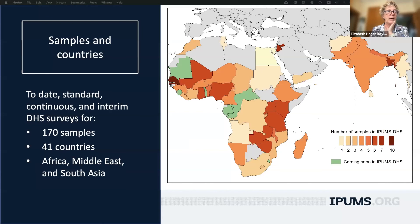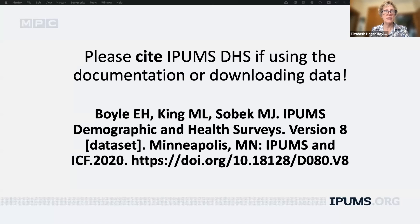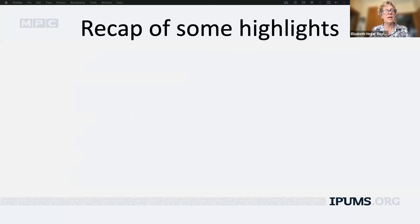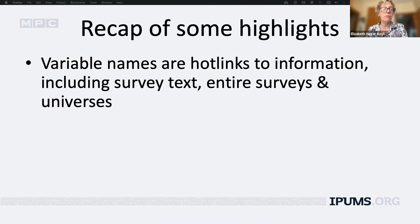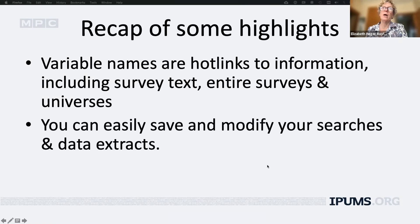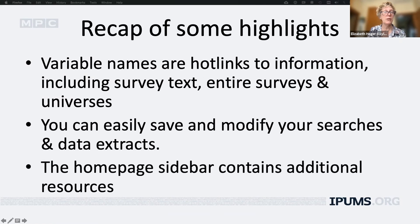To recap: we've talked about samples and countries in IPUMS DHS and asked you to please cite IPUMS DHS. Some highlights from today: variable names are hot links to information including survey text, entire surveys, and variable universes — don't miss the documentation. You can easily save and modify your searches and data extracts by going to the 'my data' link. And the homepage sidebar contains many additional resources.